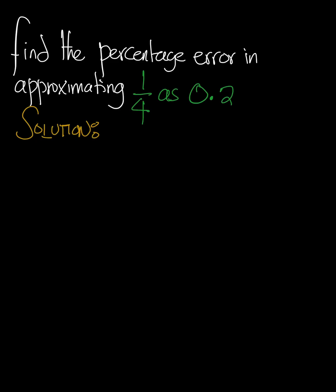Hello and welcome back to our channel, Tutoring Made Easy. In today's video, we are being asked to find the percentage error in approximating 1 over 4, which is a quarter, as 0.2.